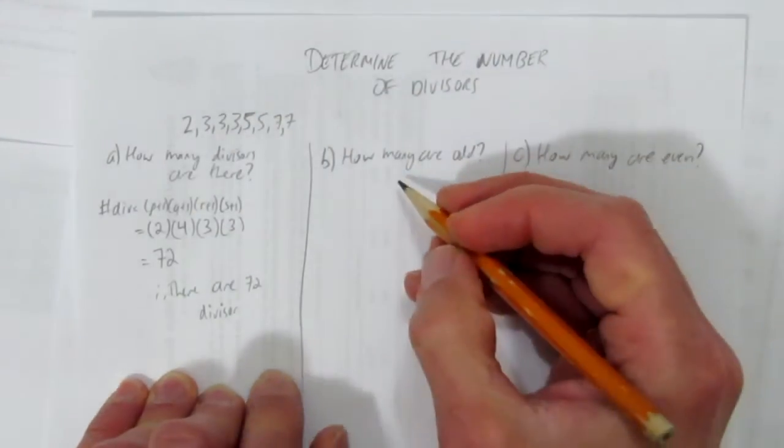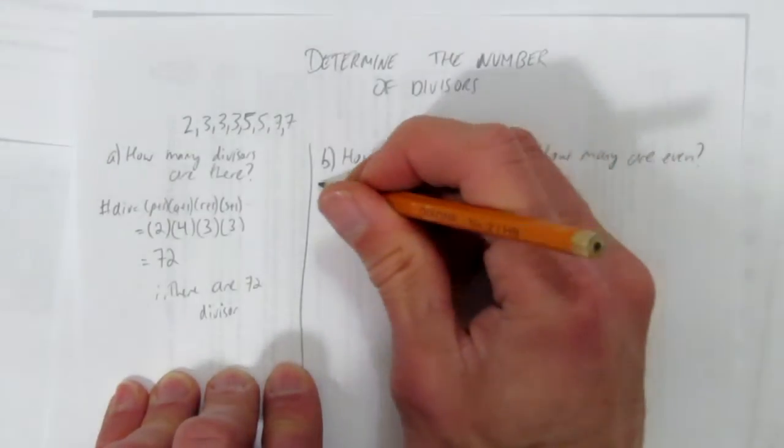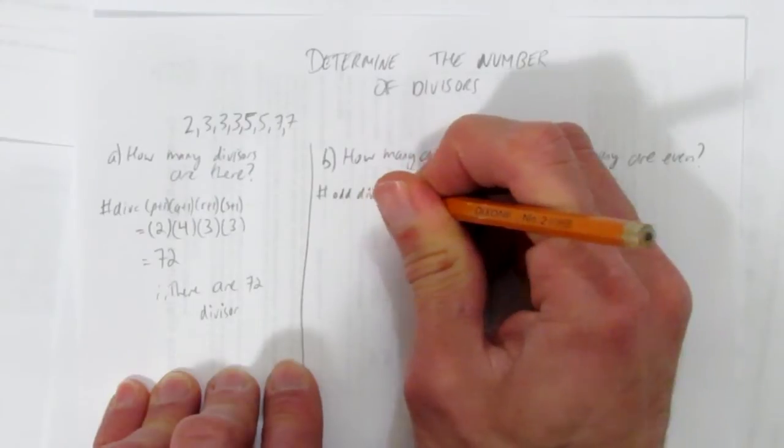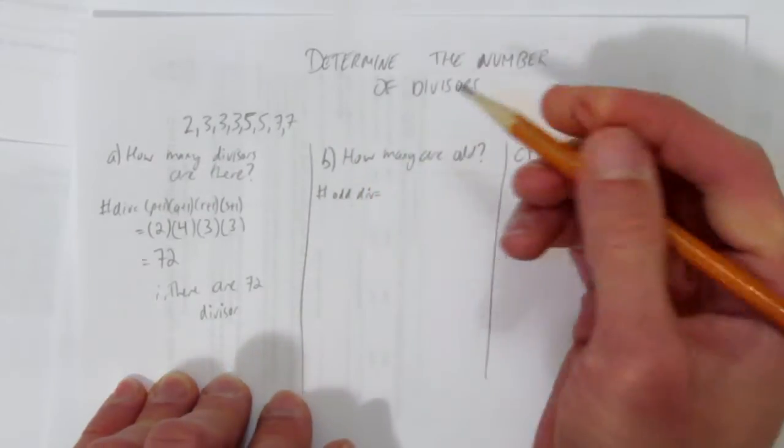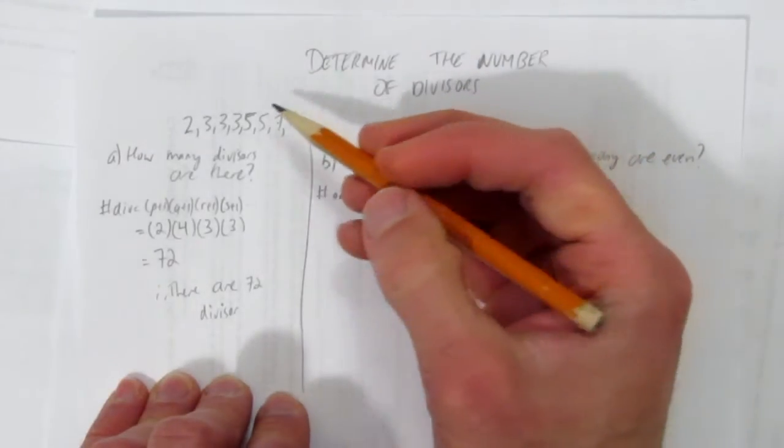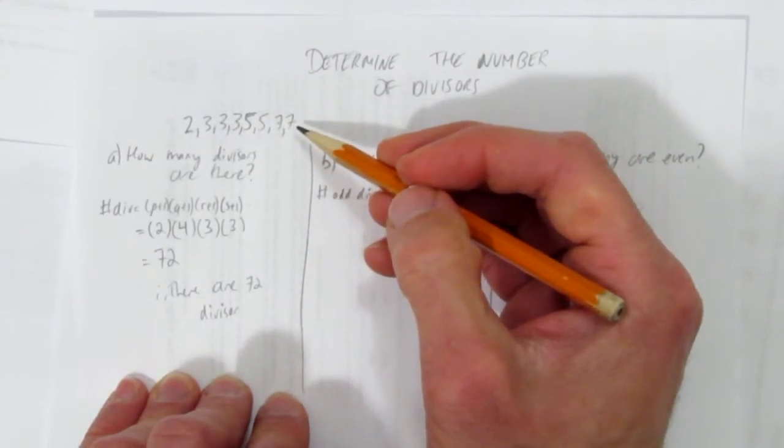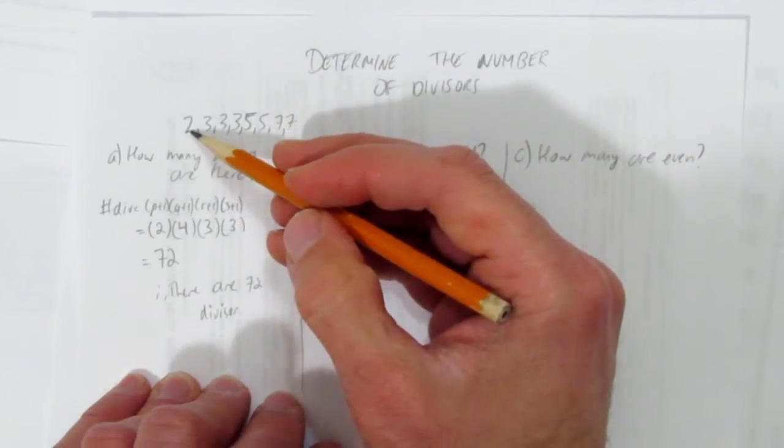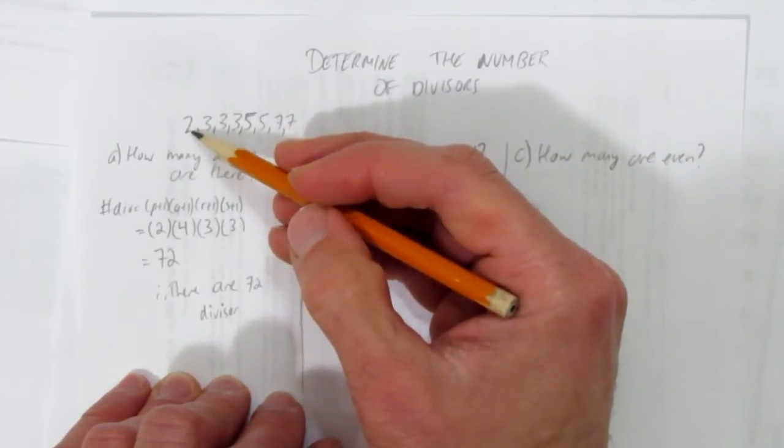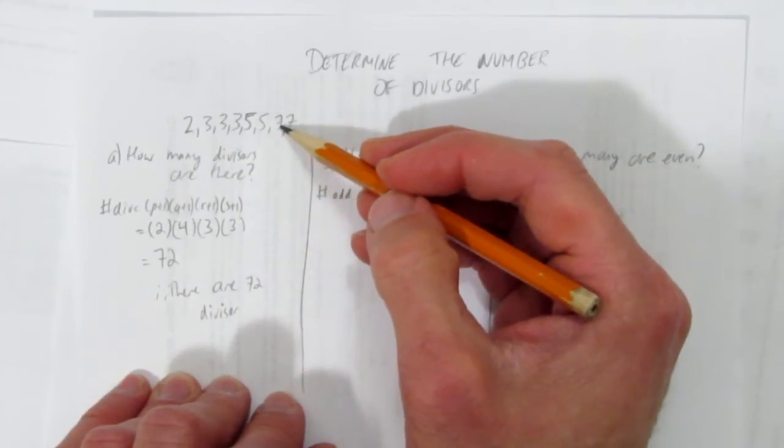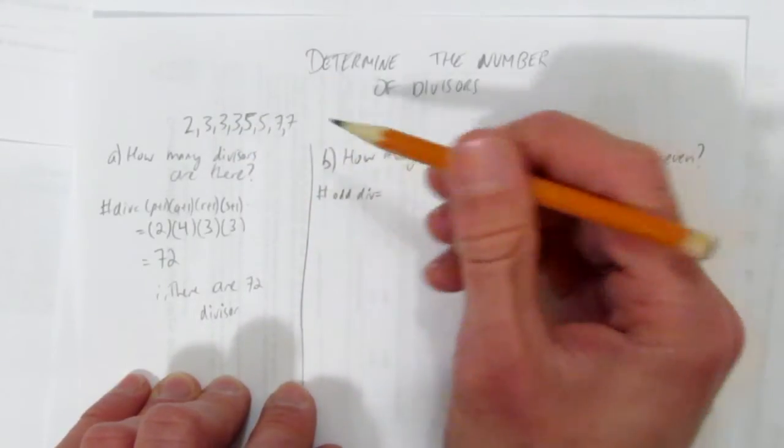Question B asks, how many of those divisors are odd? Number of odd divisors? Well, there's just a little trick you need to know, an understanding about odd and even. Any of these divisors that are odd can be included. It's really just this 2. If we just exclude this 2, then obviously 3 and 5 and 7 are odd. But if you know this fact, the question's easy.